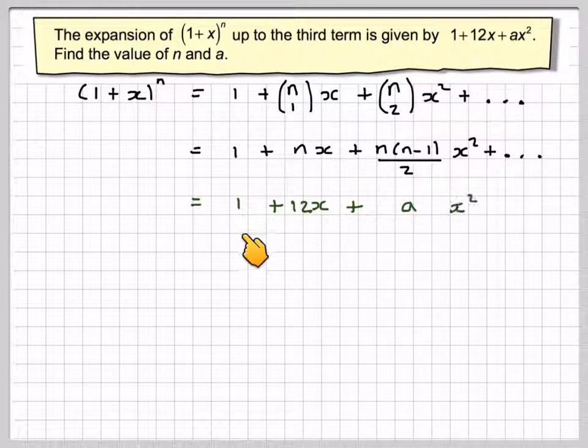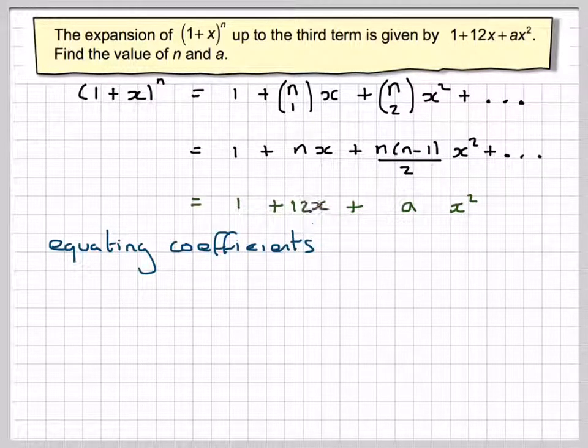So if we now write down our expansion, which is 1 + 12x + ax², and we equate the coefficients, we can see straight away that n is 12, and that a has to be equal to n(n-1)/2.